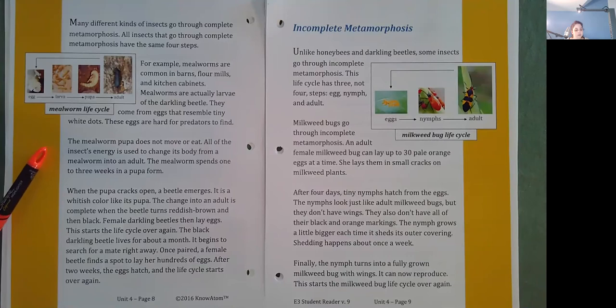Mealworm pupa does not move or eat. All of the insect's energy is used to change its body from a mealworm into an adult. The mealworm spends one to three weeks in a pupa form. When the pupa cracks open, a beetle emerges. It is a whitish color like its pupa.